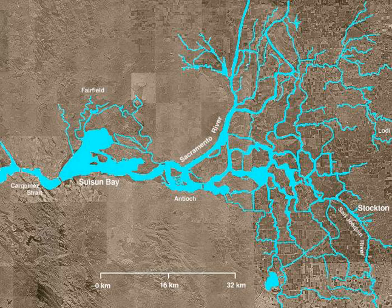Today, the delta is still among the state's most productive farming regions. In 1850, Congress passed the Arkansas or Swampland Act, which allowed for the transfer of title for wetlands to private owners on the condition that the land would be reclaimed. In California, more than 2 million acres of wetlands were partitioned under the Swampland Act, of which 500,000 acres were in the Sacramento-San Joaquin Delta, roughly the same amount of land that has been developed to date.